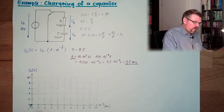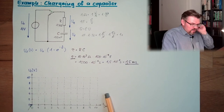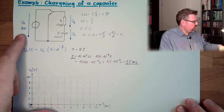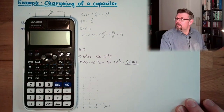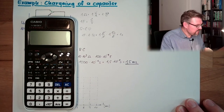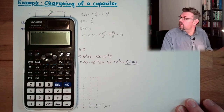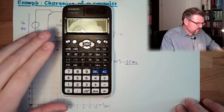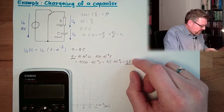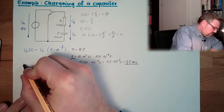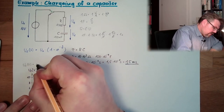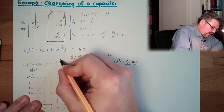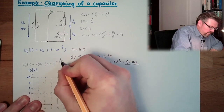So we have 1.5 milliseconds as the time constant. U0 is 10 volts, and I can immediately use my calculator. The formula is UC(t) = 10 volts × (1 − e^(−t / 1.5 ms)).